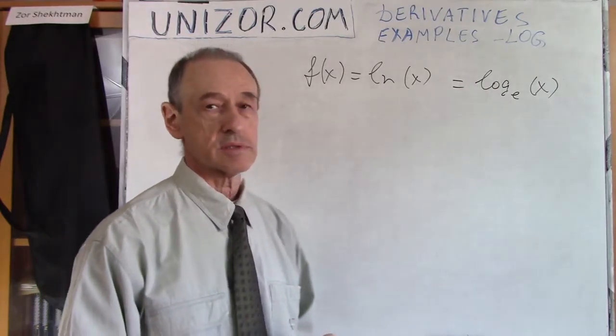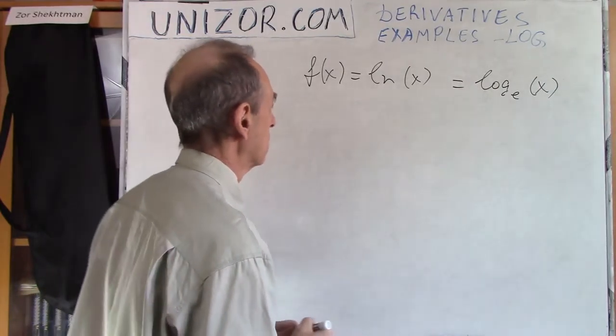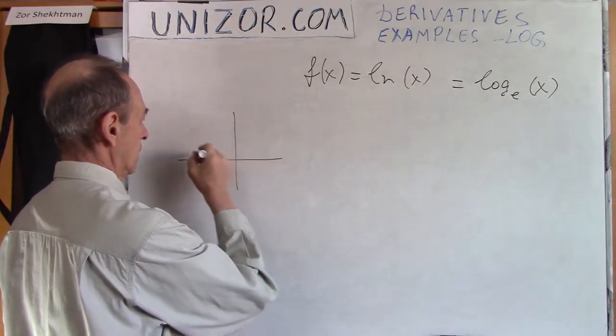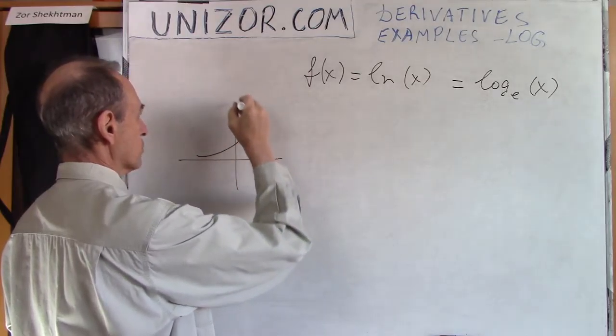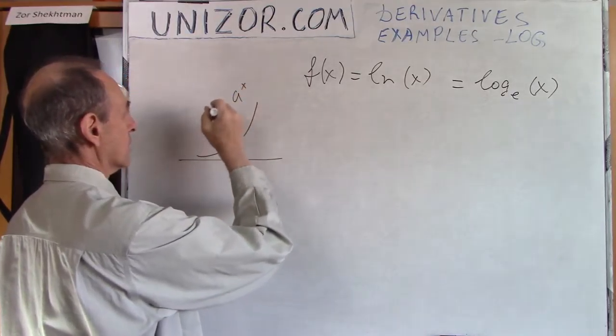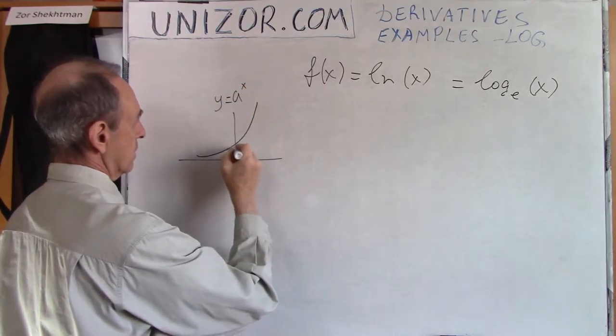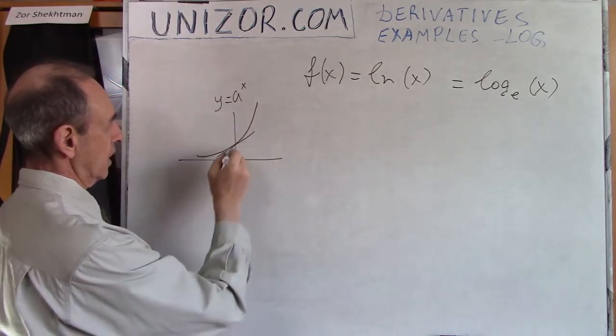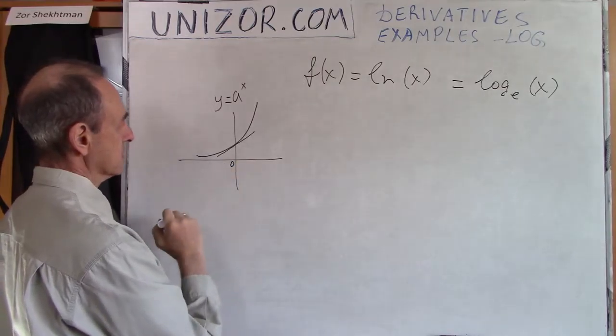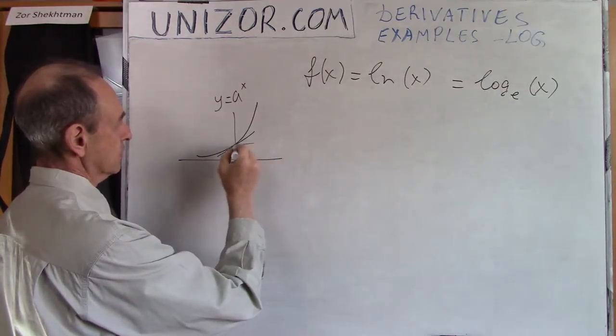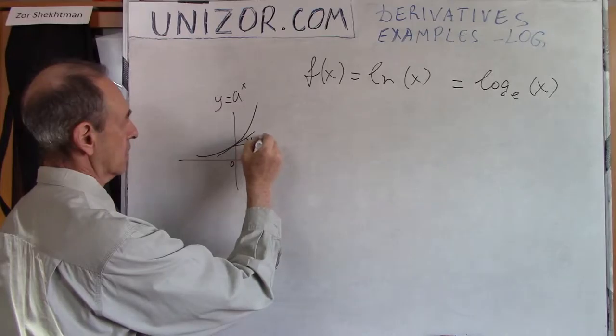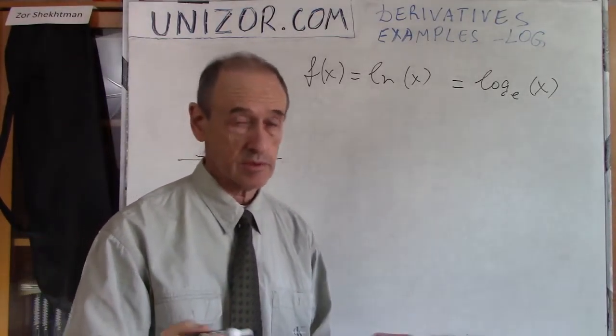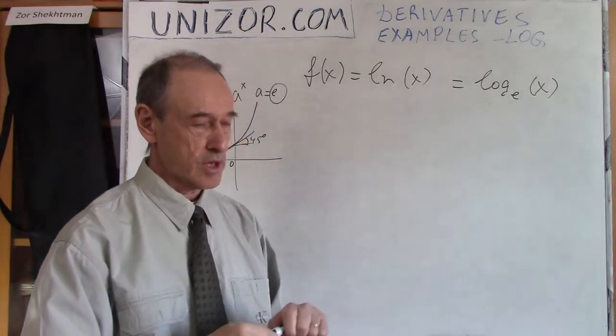We talked about this number e. If you remember, if you have some exponential function a to the power of x, then whenever this particular tangential line at x equals 0 is at 45 degrees, a is equal to some number e, 2.71, it's an irrational number.